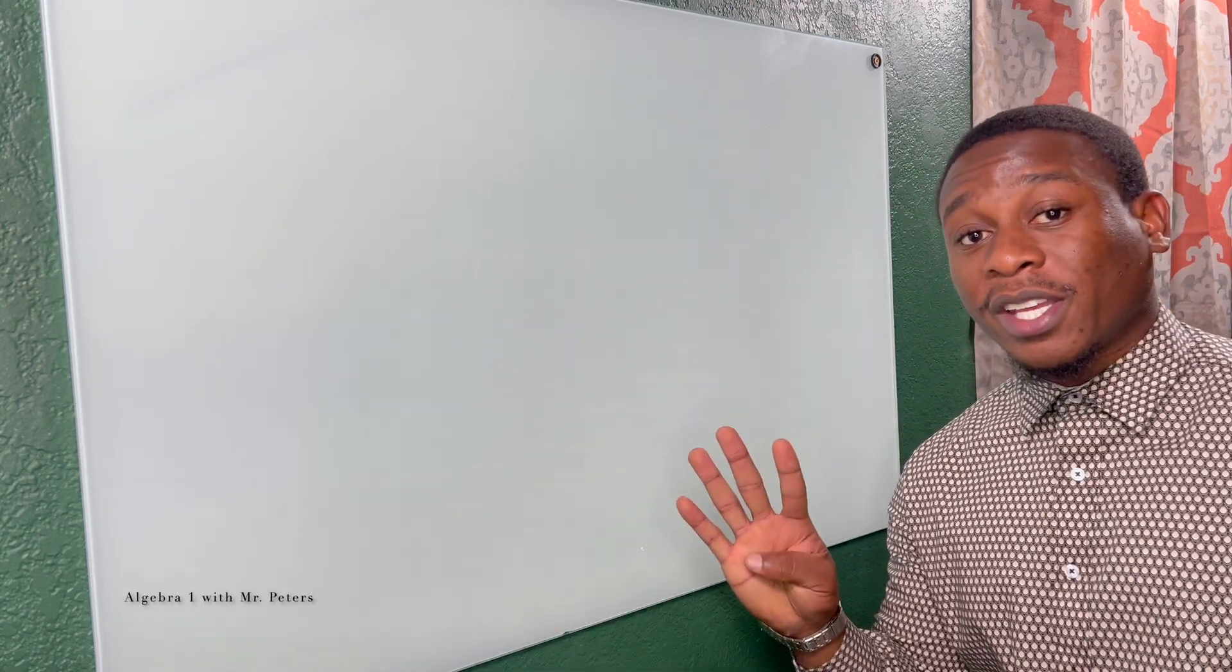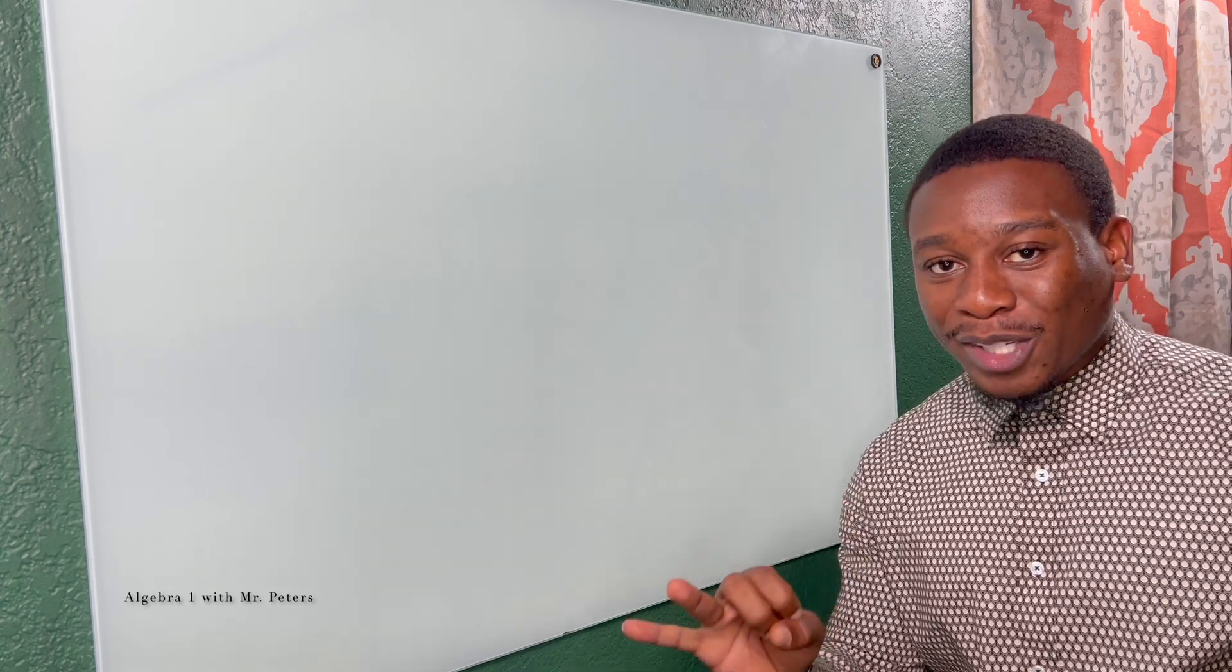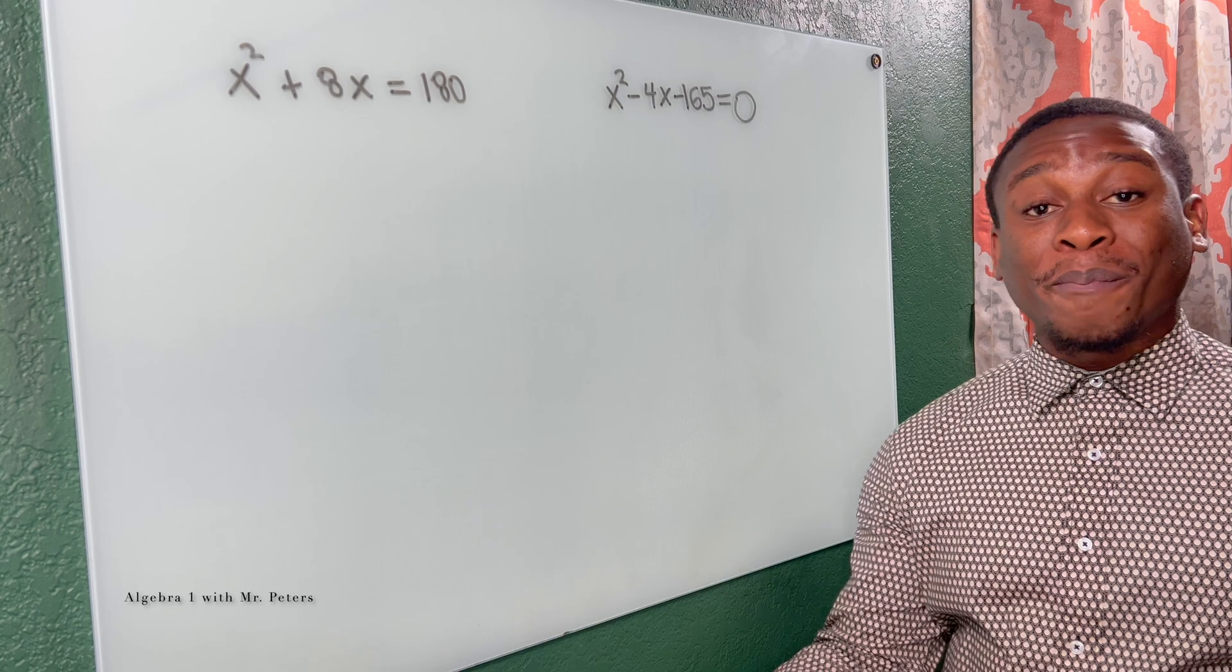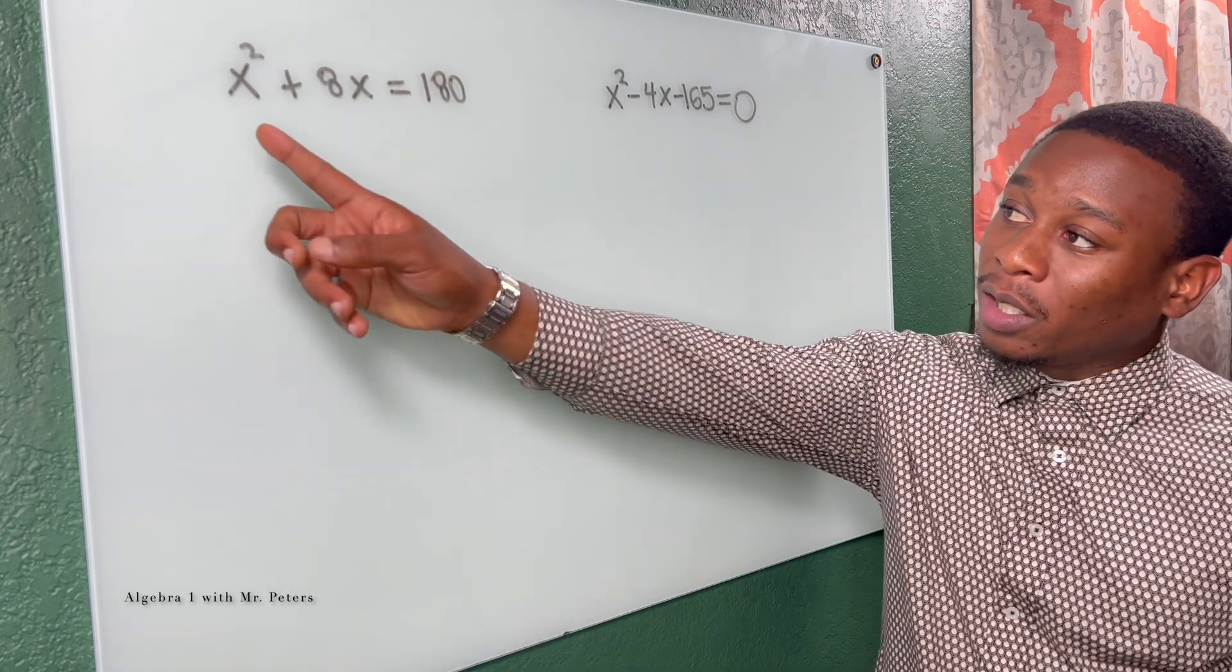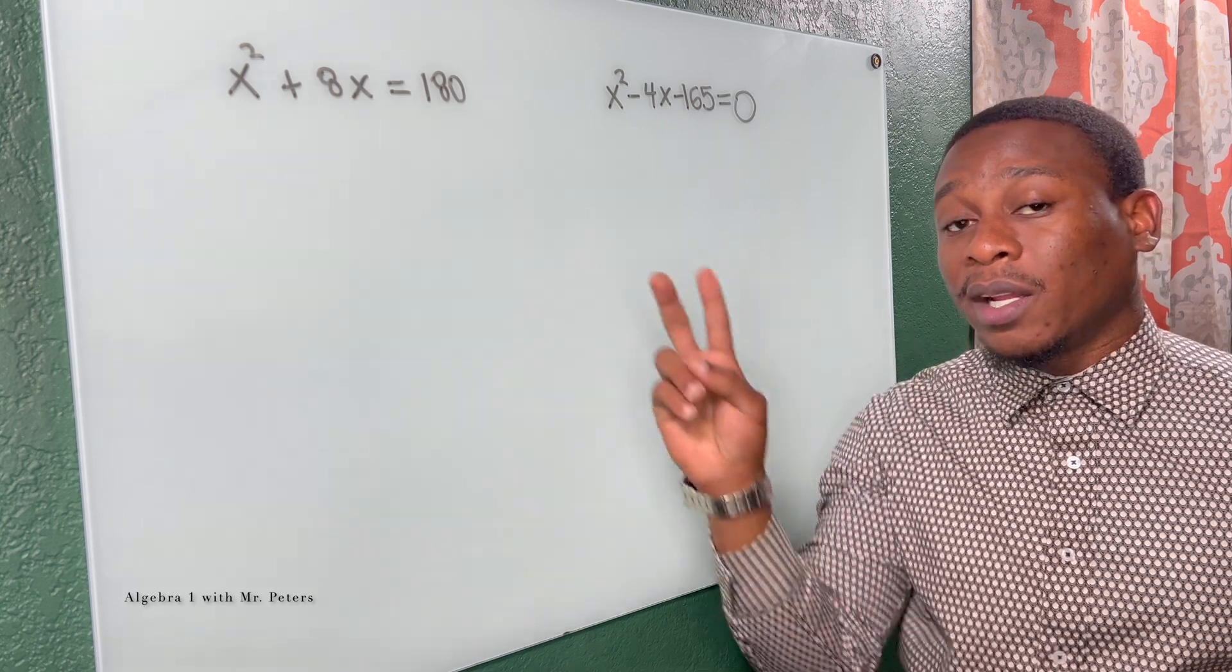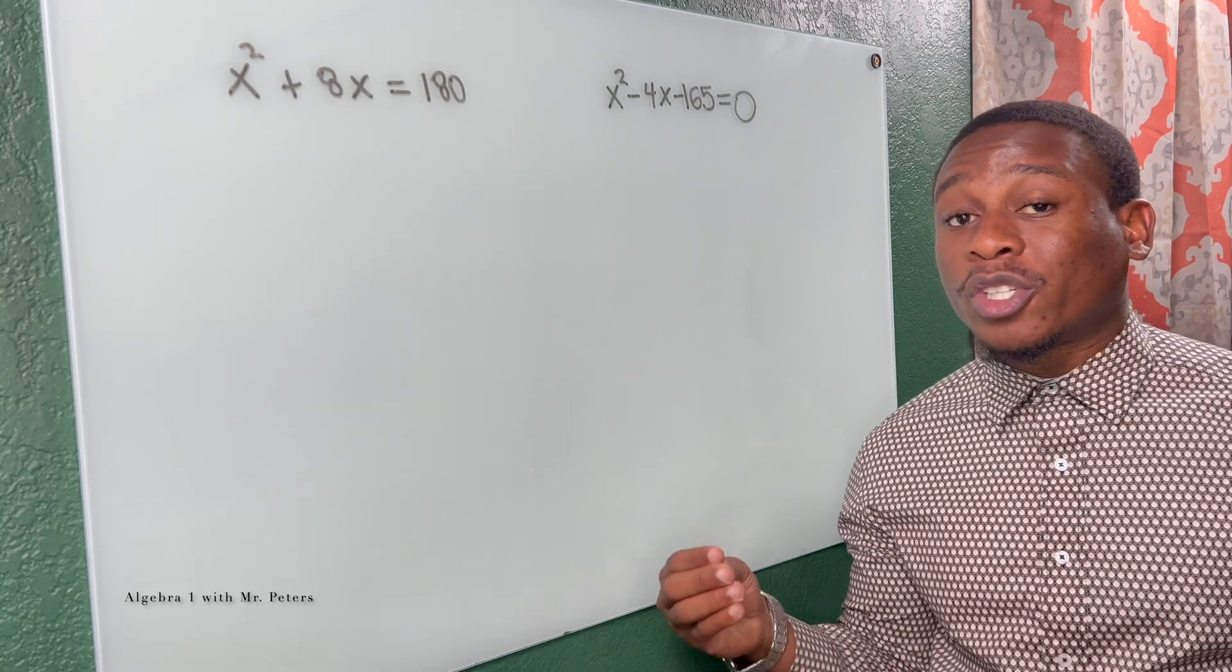What's good, math family? In today's video, we're gonna look at four examples on how to complete the square, and the last two are gonna be special cases. When we're trying to complete the square, two things we need to do: one, lead coefficient needs to be one, and two, we need to create a perfect square trinomial.